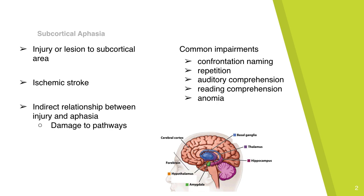Aphasia arises due to damage in the pathways. There are neuronal networks with pathways to the cortex, and this is where the aphasia arises. These pathways are impaired due to subcortical lesions. Common impairments of subcortical aphasia include confrontation naming, repetition, auditory comprehension, reading comprehension, and anomia.